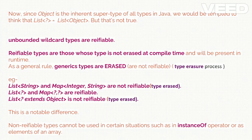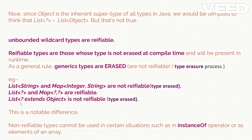For example, List<String> and Map<Integer, String> are not reifiable — they are type-erased and present only at compile time, not runtime. However, List<?> and Map<?, ?> are reifiable and present at runtime as well. So List<?> is reifiable, while List<? extends Object> is not reifiable — it is type-erased. This process is called type erasure.